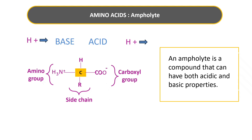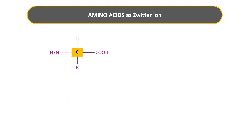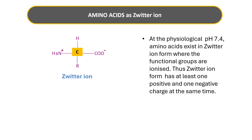What we get is the ionic form of amino acid known as the zwitterion form. In our body, amino acids do not exist in the uncharged form — they exist in zwitterion form where the functional groups are ionized. The pH of our body is 7.4, also called physiological pH. So at physiological pH 7.4, amino acids exist in zwitterion form where the functional groups are ionized.